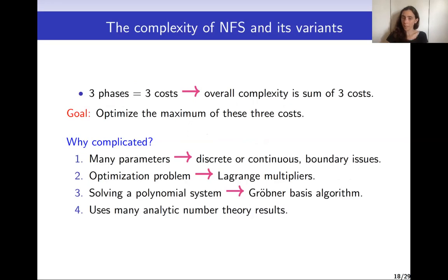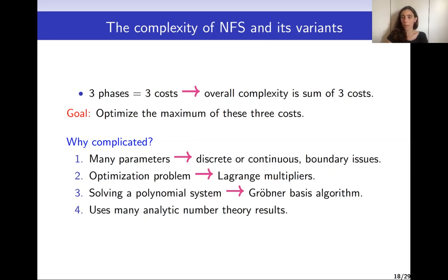How do we evaluate the complexity of NFS and all its variants? NFS and any index calculus algorithm have these three steps, so the overall complexity is the sum of the costs of each step. To optimize the overall complexity, we want to minimize the maximum of these three costs. This is complicated because NFS and its variants have many parameters — some discrete, some continuous — which vary depending on the variant and the polynomial selection for F1 and F2. There are boundary issues, and the whole optimization problem using Lagrange multipliers becomes complex. When solving the polynomial system, Grübner basis algorithms are used, and on top of this, analytic number theory results must be considered.